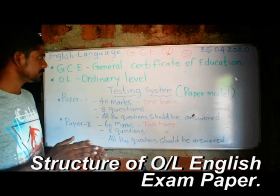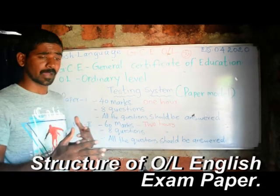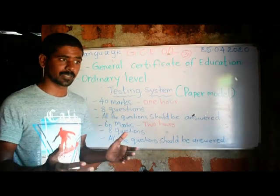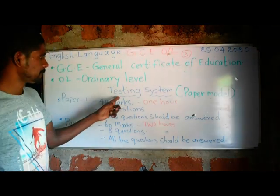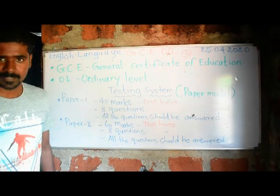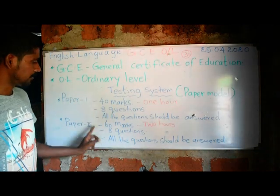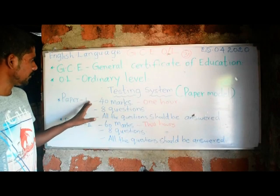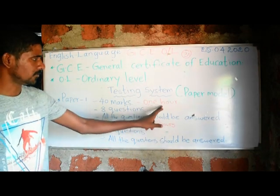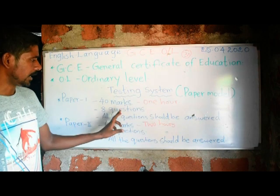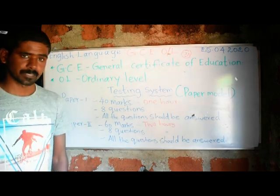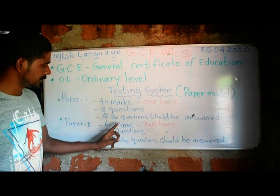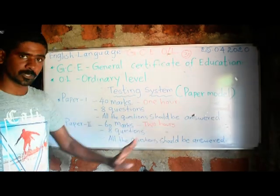First, I would like to share how the exam papers are set. In the testing system, there are Paper 1 and Paper 2. Paper 1 is for 40 marks — there are 8 questions and all questions must be answered. Paper 2 has 60 marks, is a 2-hour paper, and also has 8 questions, all of which must be answered.